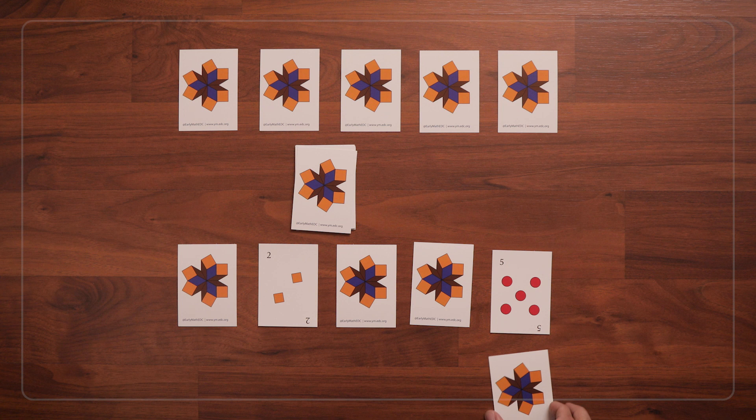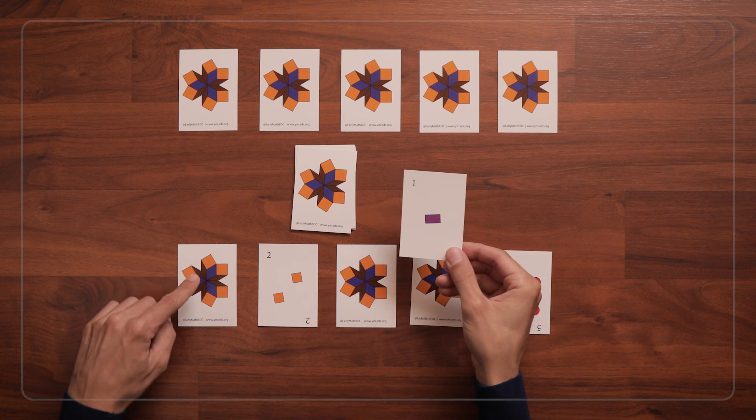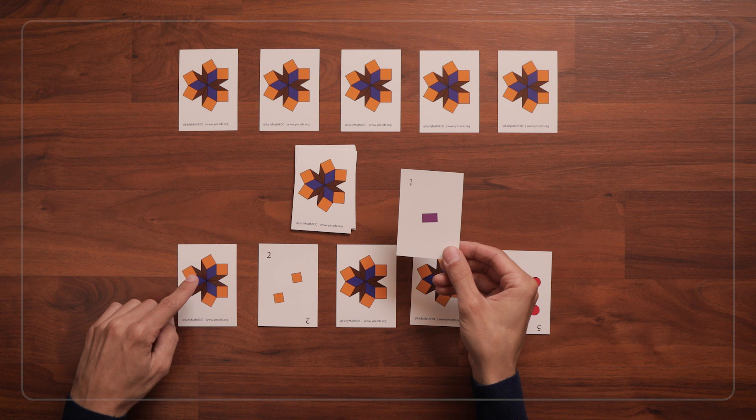Now I'll flip over the card that I just replaced, and it's a 1. So I'll do the same for the card in the 1 spot in my line of cards.